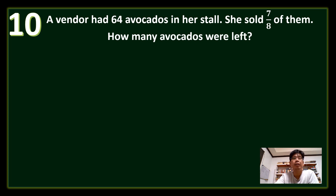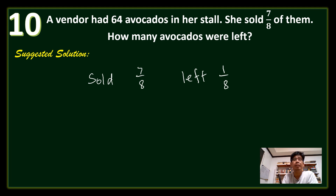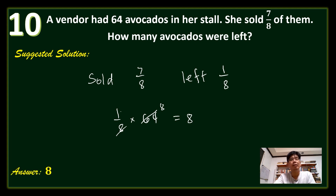Question number 10: A vendor had 64 avocados in her stall. She sold 7-eighths of them. How many avocados were left? Since the vendor sold 7-eighths, what is left is 1-eighth. We find 1 eighth of 64: 64 times 1 divided by 8 equals 8. Therefore, there are 8 avocados left.